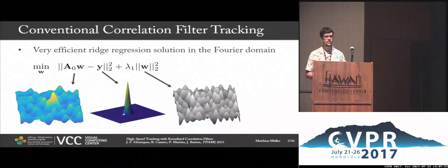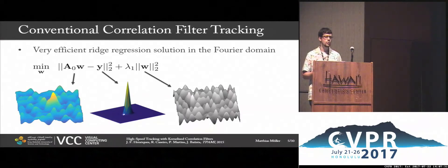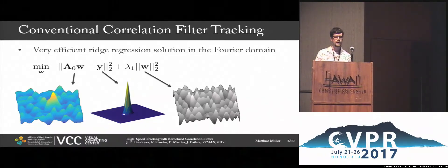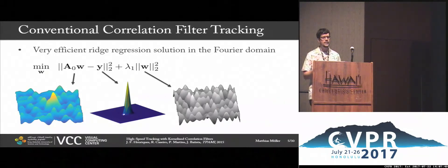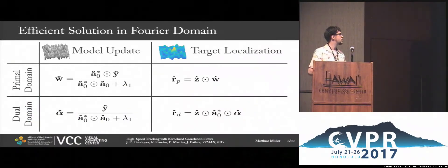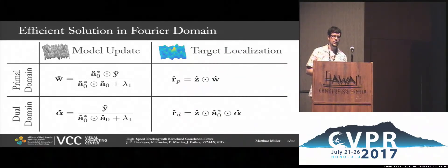In conventional correlation filter tracking, in our data matrix A0 we have all of these circular shifts encoded. We are trying to learn a filter that will regress to Y, where Y is the response, usually assumed to be a Gaussian. The idea is that from frame to frame the target doesn't usually move much, so this seems like a reasonable assumption. There's a regularizer on the filter, and this problem can be solved very efficiently in the Fourier domain — in either the primal or dual domain. The dual domain allows the use of kernels and multi-dimensional features.